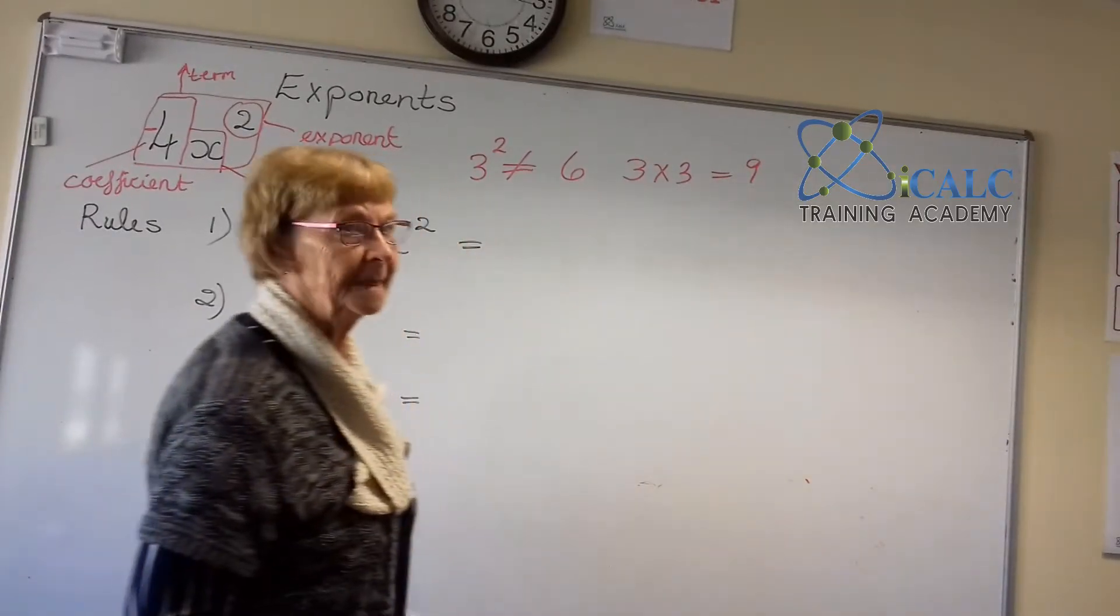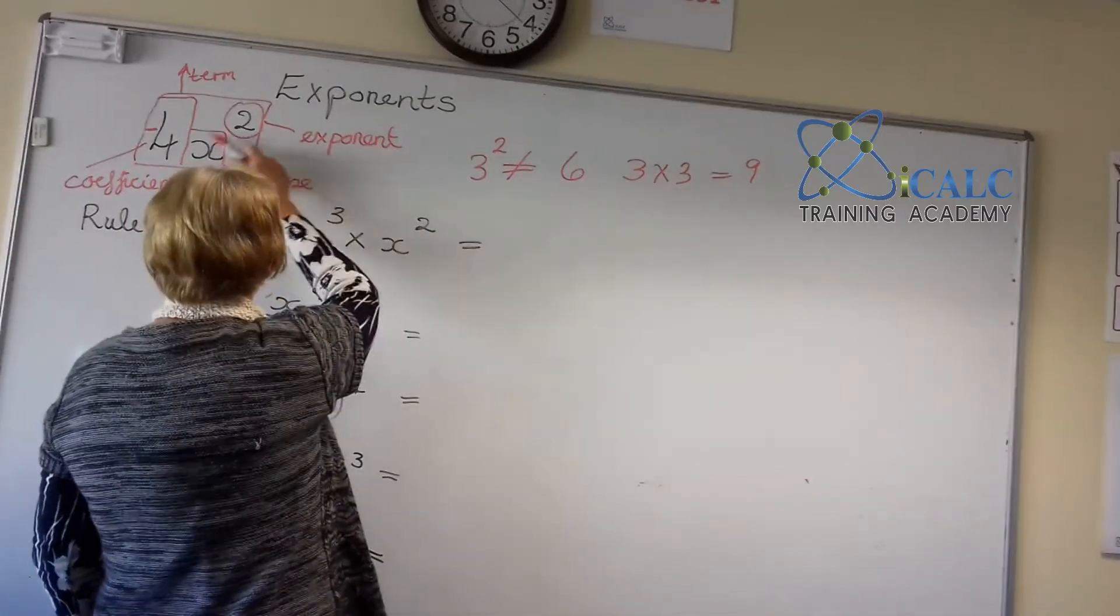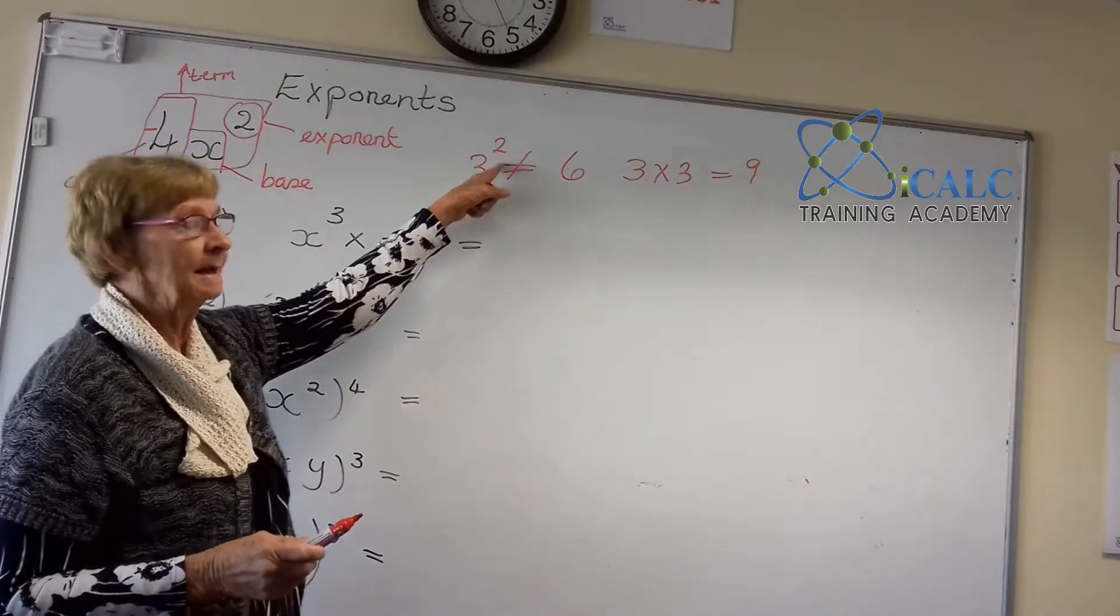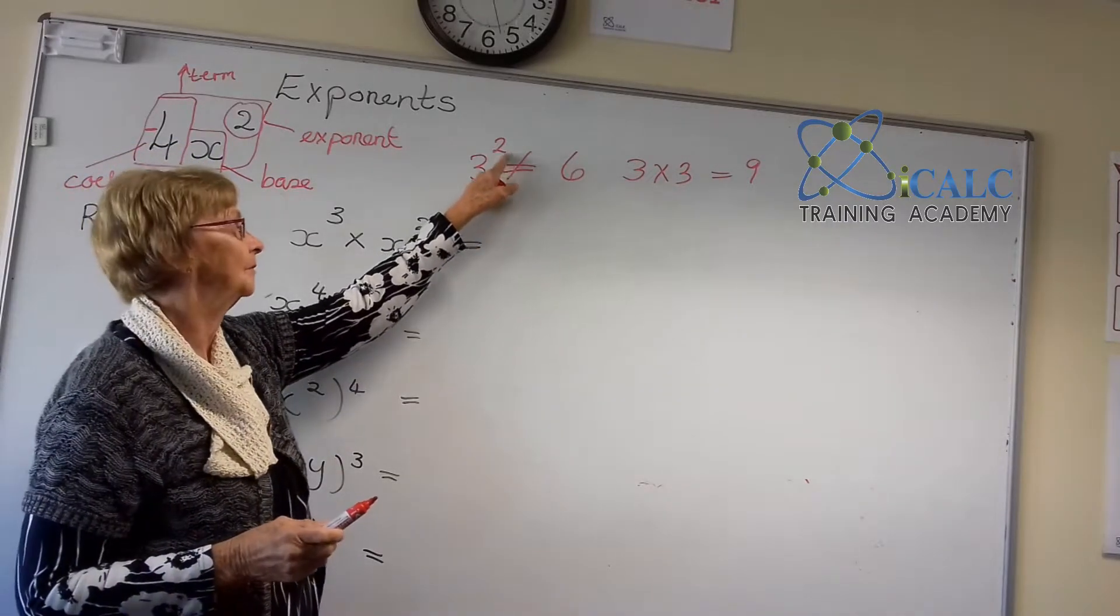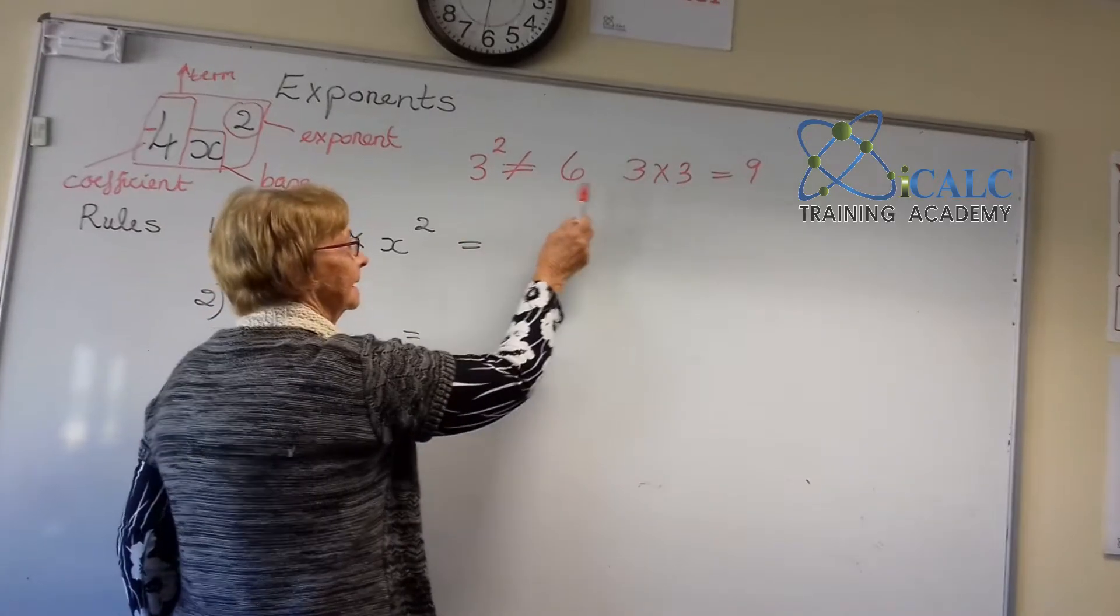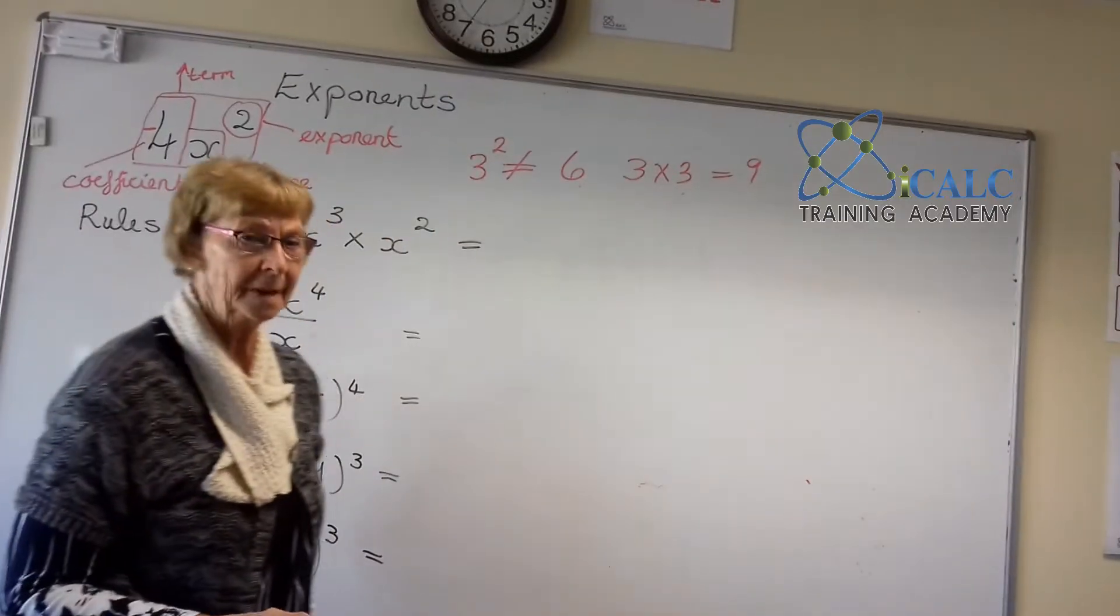You have to remember that raising an exponent means that we're raising that number or the base by itself, the number of times that the exponent is referred to. So 3 squared is not 6, it is 3 times itself twice, which will give you the number 9.